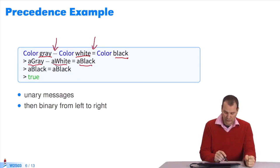Now, I have to send messages. I have to choose between the message minus and the message equals. I send the message minus to the object gray with white as an argument. It returns the color black. I compare the two colors. I get black equals black, which is true.